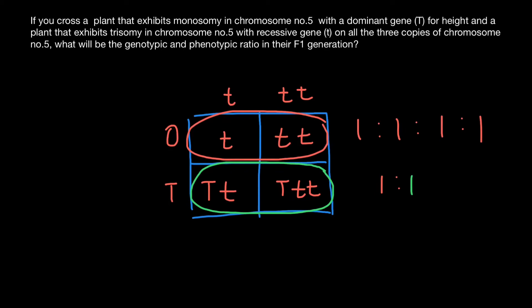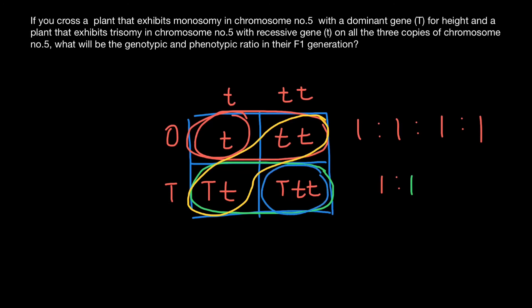This is the answer to the second question. I also want you to pay attention that we have monosomy and trisomy in the parents, but in the progeny we see that 50% of the offspring are going to be diploid, 50% are going to be diploid, and we also see monosomy and trisomy among the offspring.